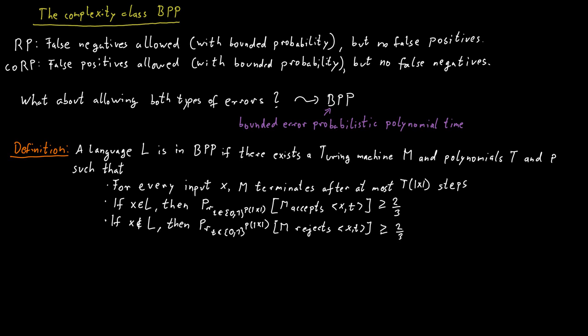That means, no matter whether the word is in the language or not in the language, our Turing machine will always return the correct result with the probability of at least two-thirds. But it might be wrong with the probability of one-third.